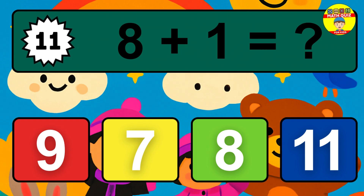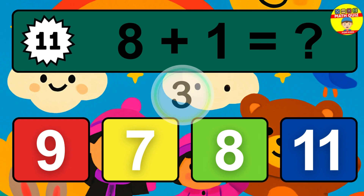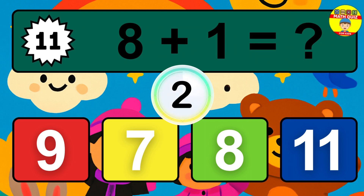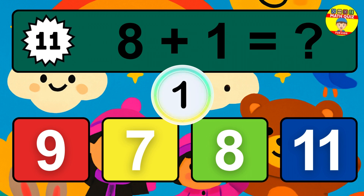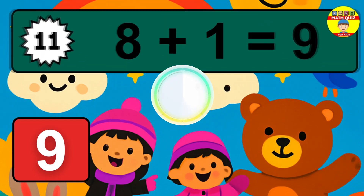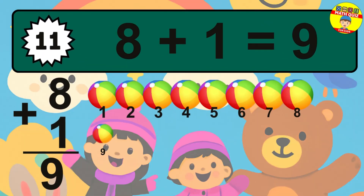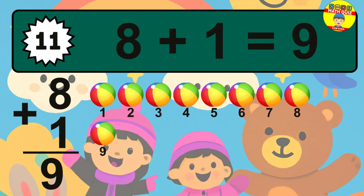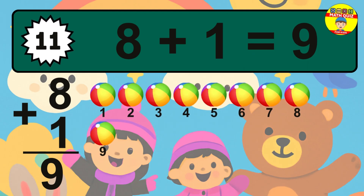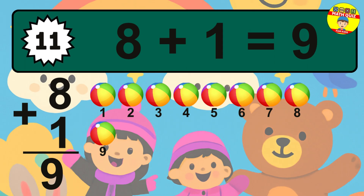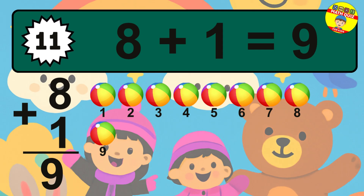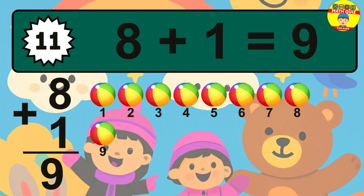Question 11. 8 plus 1 equals what? The answer is 8 plus 1 is 9. Let's count it: 1, 2, 3, 4, 5, 6, 7, 8, 9.